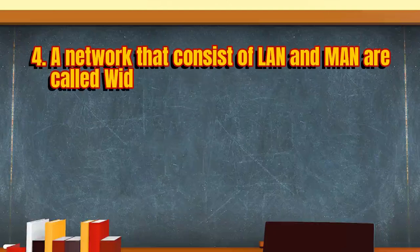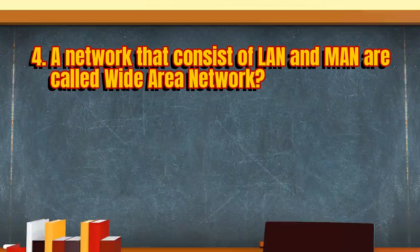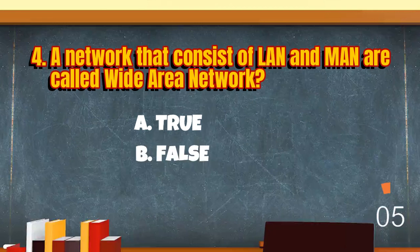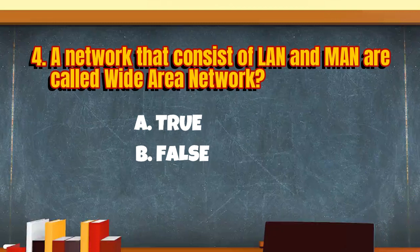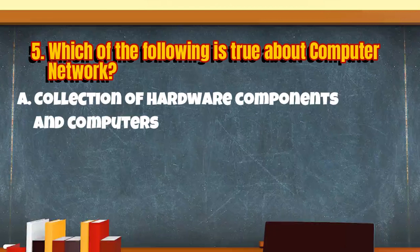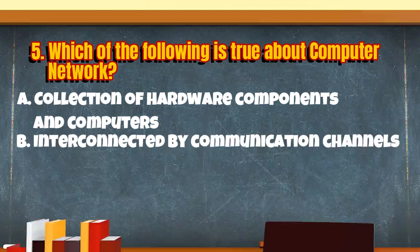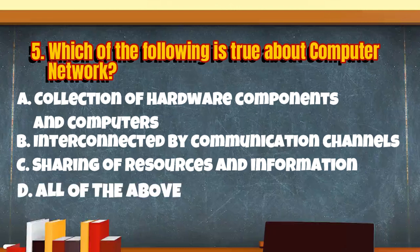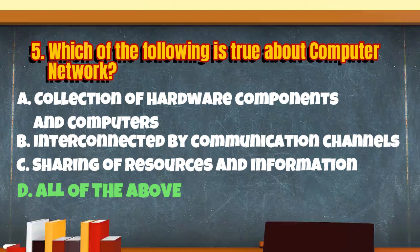A network that consists of LANs and MANs is called a wide area network. A. True. B. False. The correct answer is true. Which of the following is true about computer network? A. Collection of hardware components and computers. B. Interconnected by communication channels. C. Sharing of resources and information. D. All of the above. You are correct. The correct answer is all of the above.